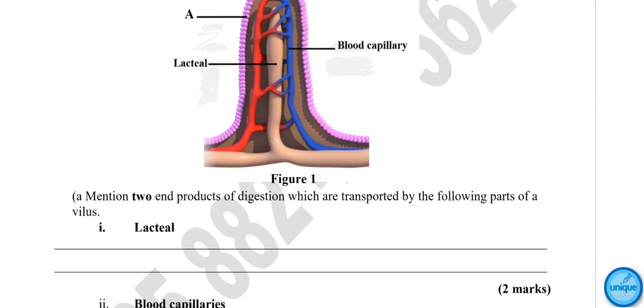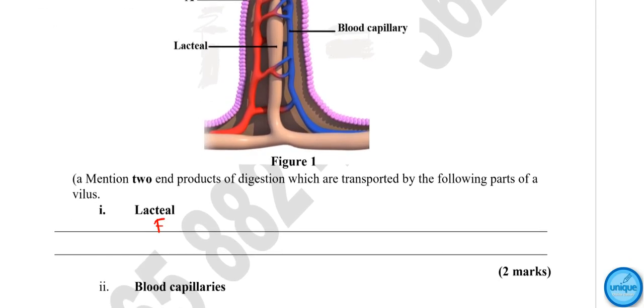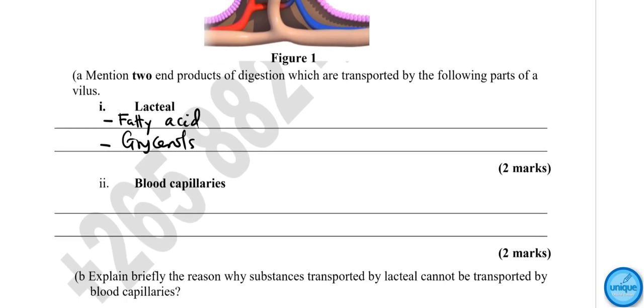The lacteal transports fatty acids and glycerol. Whereas the end products which are transported by the blood capillary are amino acids and glucose. These are some of the end products of digestion which are transported by these vessels.